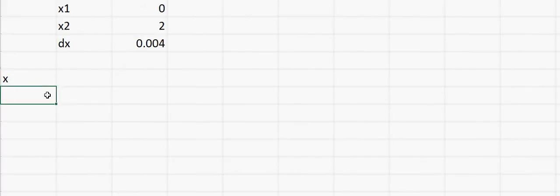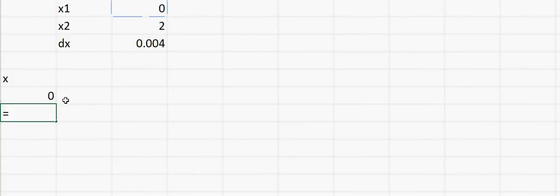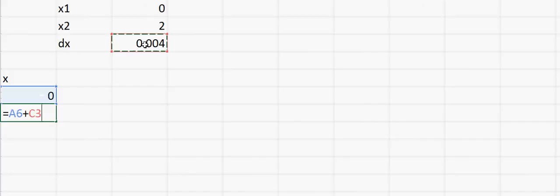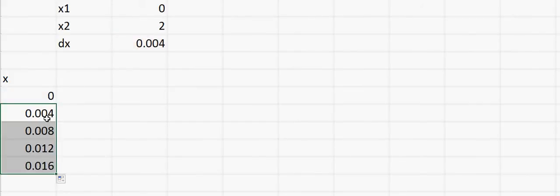Now let's simulate x. My first value is x1 which is 0, and then the next increment would be x1 plus dx. I'll put a dollar sign here so that when I drag the cell down, the reference for that cell will not change. You can see that if I drag it down there is an increment from 0.004 to 0.008, and if I click on this, the reference is still the same. However, the reference A7 has changed because there is no dollar sign there.